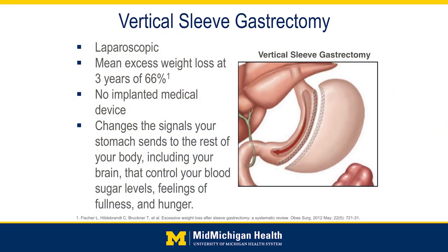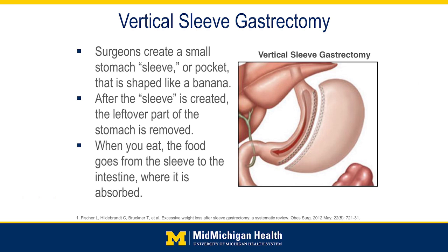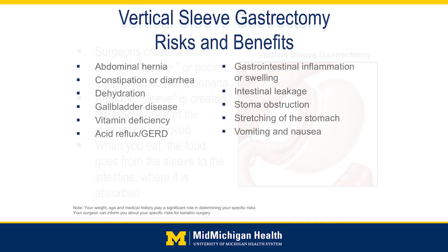The stomach is turned into a long slender tube — like the sleeve of a shirt — and the fundus is removed along with it. Many patients say they no longer feel the constant hunger they used to. Food follows the exact same route as before; we're not rerouting the intestines, so the risk of vitamin deficiencies or malabsorption is significantly reduced compared to the gastric bypass. The surgery works primarily through restriction — about 80 to 85 percent of the stomach volume is removed, so patients physically cannot consume large amounts of calories at one sitting.